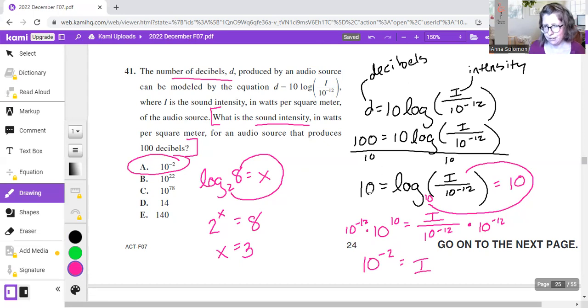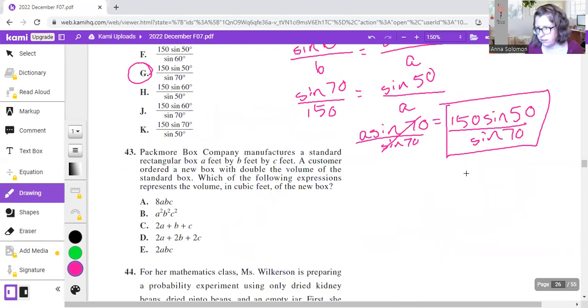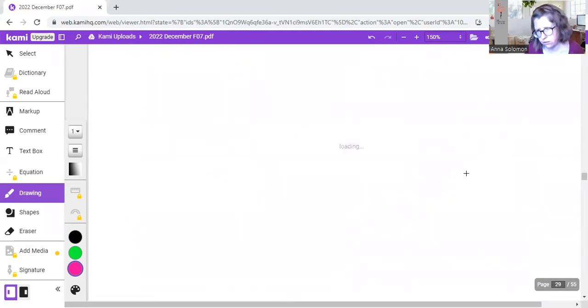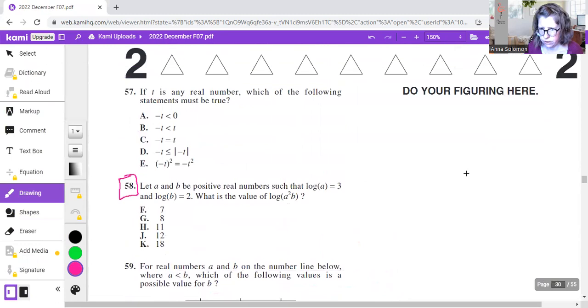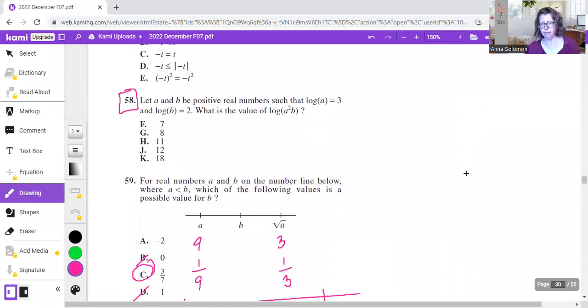All right, moving right along. The next one is, let's see, it's number 58, so we're just going to scroll. Scroll too far. There we go, 58.